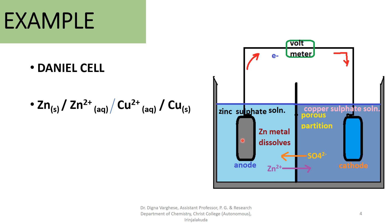Zinc in zinc sulfate solution and copper in copper sulfate solution — zinc in zinc sulfate acts as the anode and copper in copper sulfate acts as the cathode. These two solutions are separated by a porous partition, and electrons flow from the anode to the cathode. This is an example of a reversible cell.